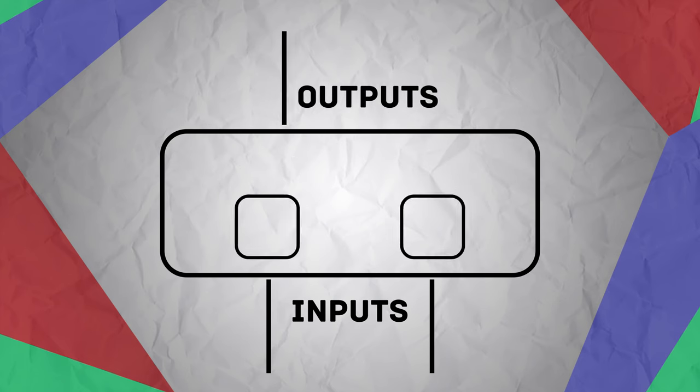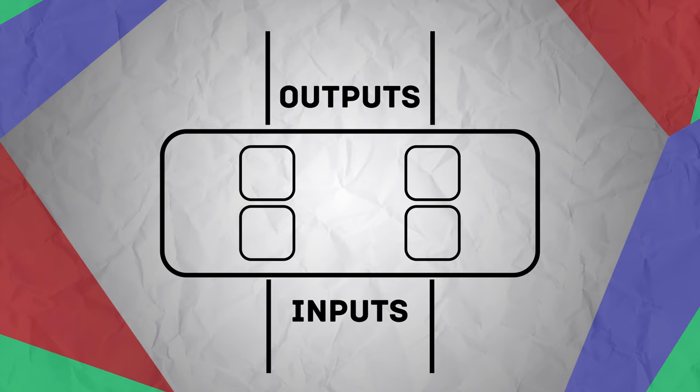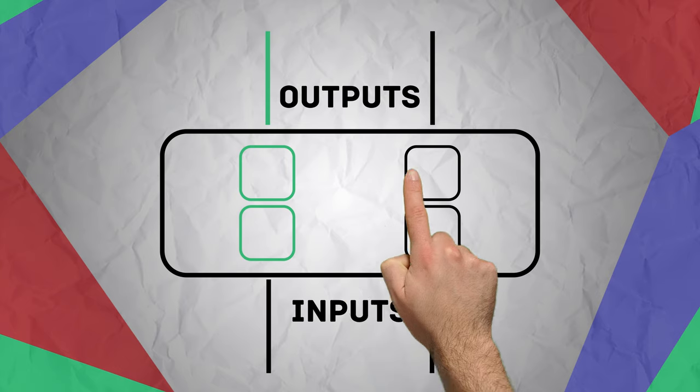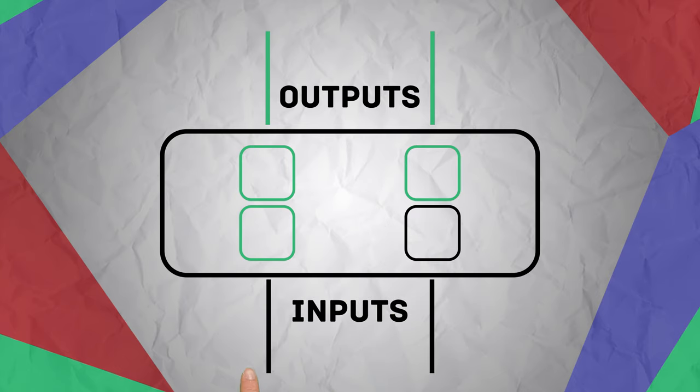Let's build on this concept. If our switch now has one additional output, we've turned our basic switch into a router. A router allows for essentially one-to-many — a single input can be routed to many different output destinations. Each one of these paths is referred to as a bus. A bus is basically a path in which you can route a video signal to a particular destination. Remember that term because it will come up again later.